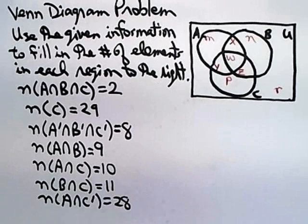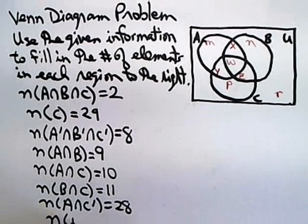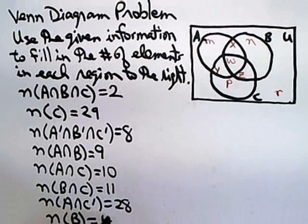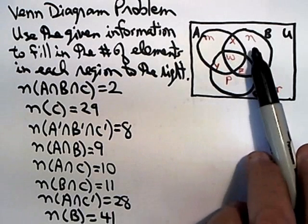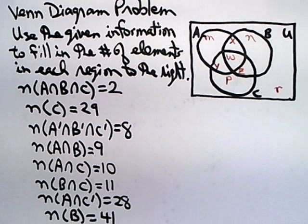And last but not least, we know that the number of elements in set B is 41. We want to use that information to figure out the number of elements in each of these labeled regions. As always, if possible, you want to start in the innermost region.